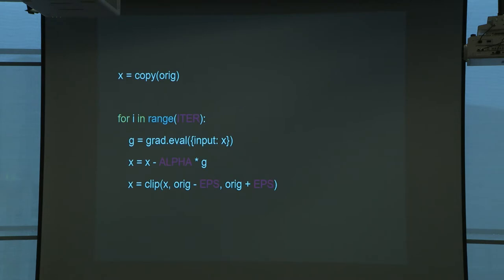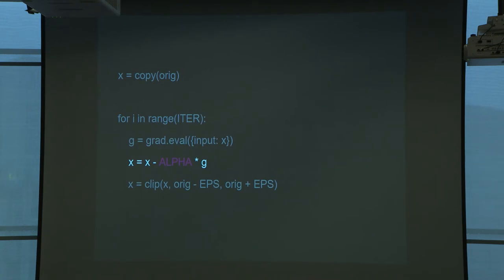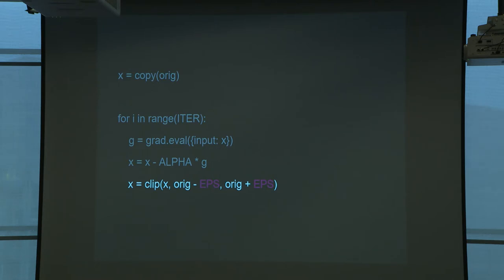In code, this is literally all it takes to generate an adversarial example. You go through iterations, evaluate the gradient with respect to your input, update your image, then clip it so the adversarial image stays within epsilon of the original image. To ensure the cat still looks like a cat, that clipping step keeps you within an epsilon ball around your original image — a certain pixel distance or L2 distance.